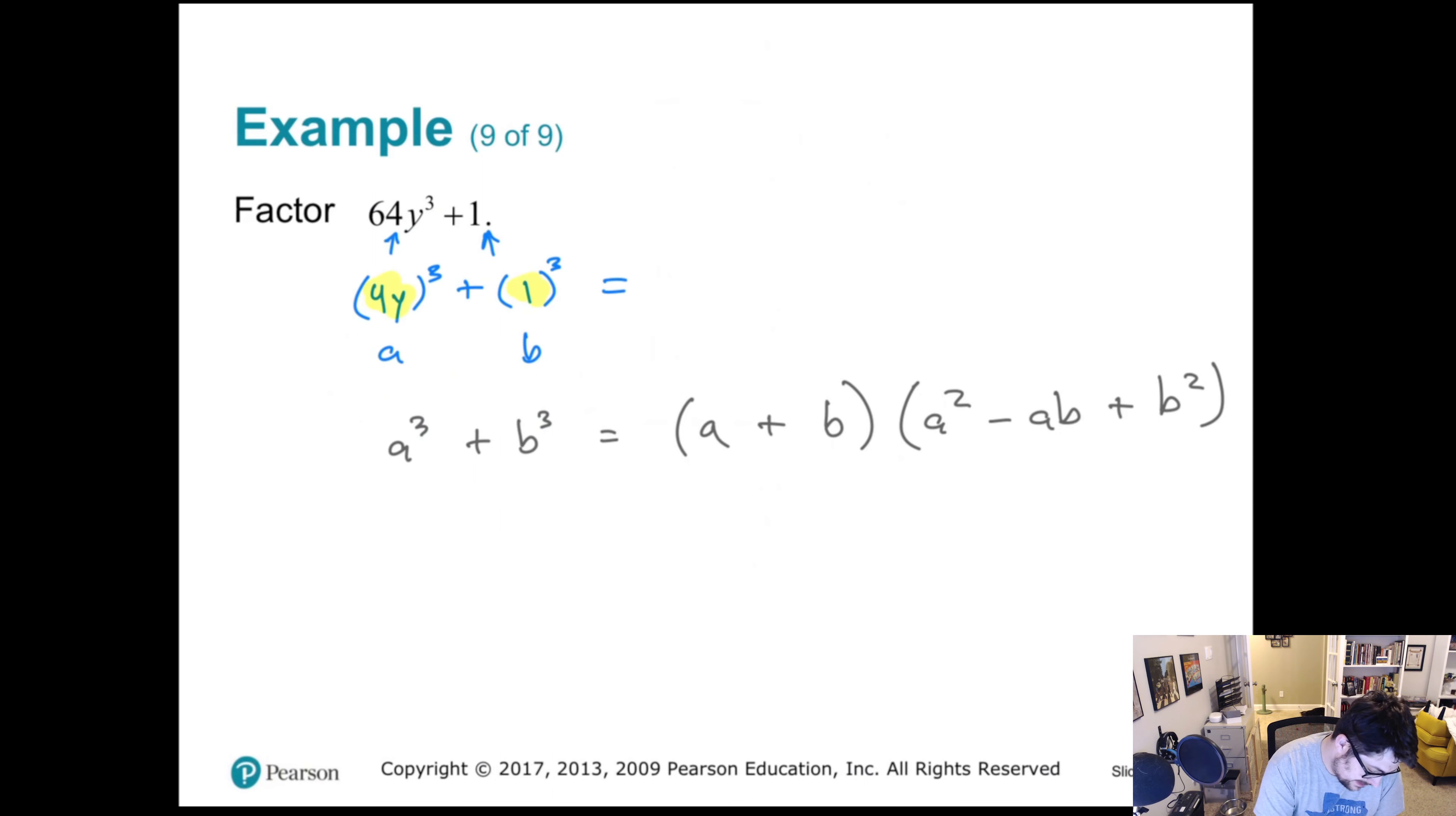So let's plug this thing in. Our a is 4y. Our b is 1. a squared. We're going to take 4 and y. Because 4y is our a. We're going to square it. So 4 squared is 16. y squared is y². Next thing is minus a times b. So 4y times 1 is 4y plus b squared. In our case, 1 squared, which is 1. And we're done. That's it.